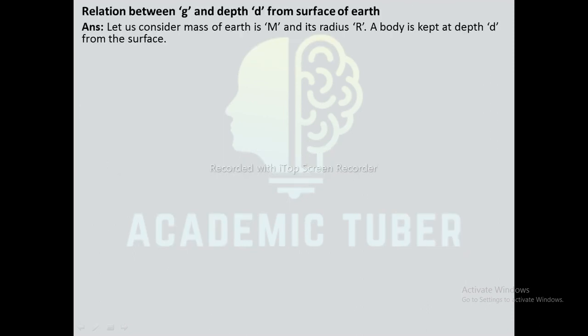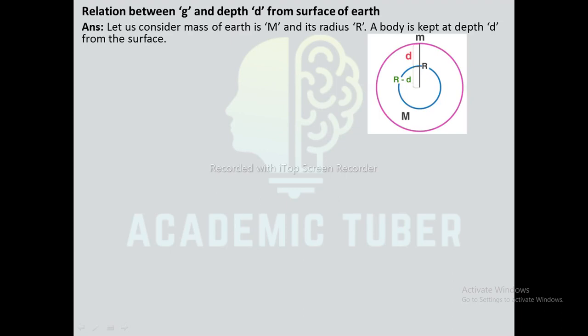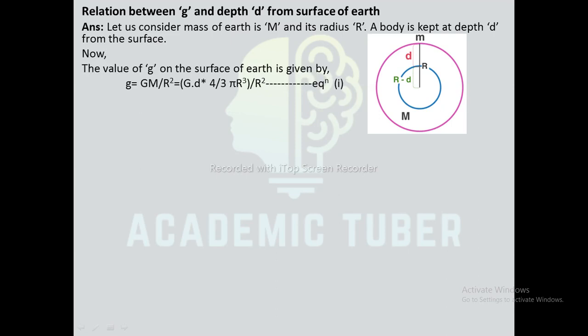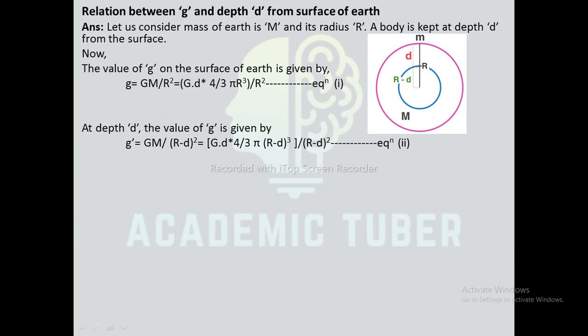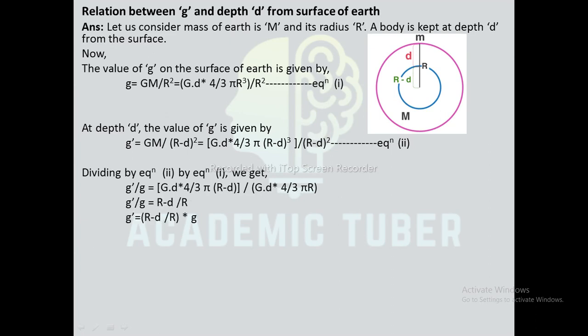Relation between g and depth d from the surface of Earth: Mass of Earth is M, radius is R. On the surface, g = GM/R². Using density ρ = mass/volume and volume of sphere = 4/3πr³, so M = ρ × 4/3πr³. At depth d, g' = GM/(R−d)² (equation 2). Dividing equation 2 by equation 1: g' = [(R−d)/R] × g. This is the relation between g and depth d — as depth increases, g decreases.